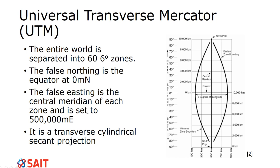The false easting - we call it 'false' because there is no true zero on a circle. On our ellipsoid, there is no absolute zero, so we call it a false zero. The false easting is individual for each zone. The center line of each zone, known as the central meridian, is set to 500,000 meters east. This is great because it means there are no negative numbers.